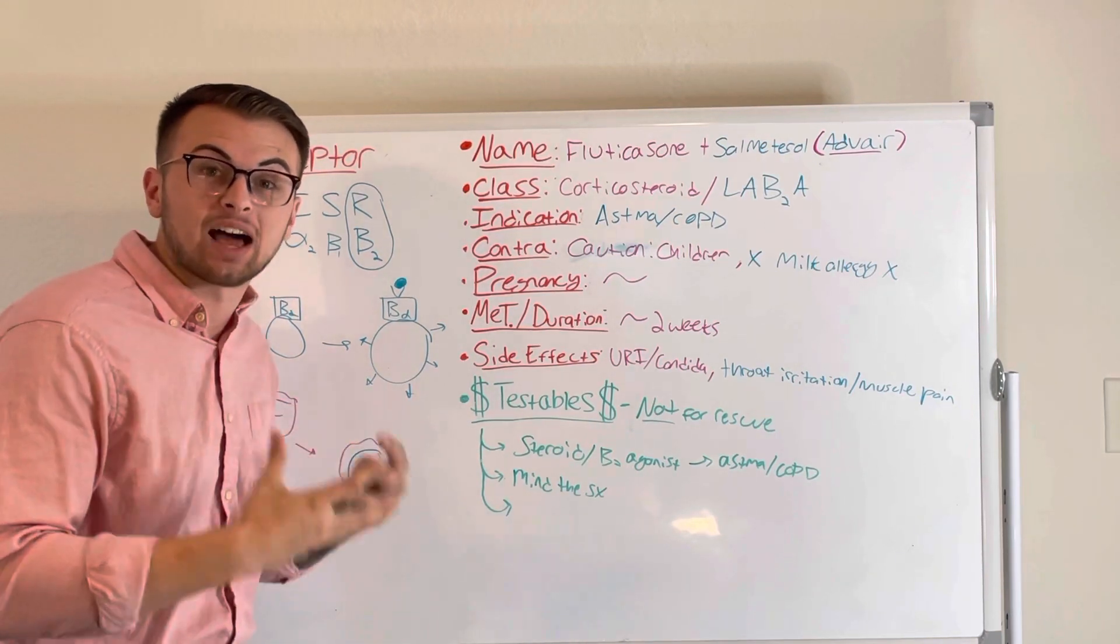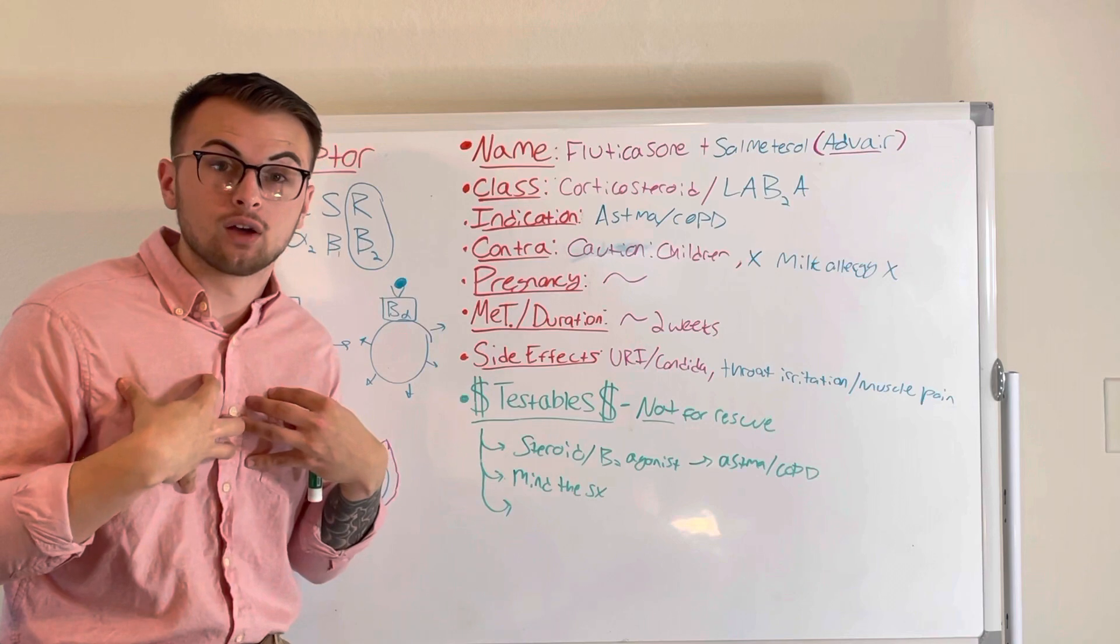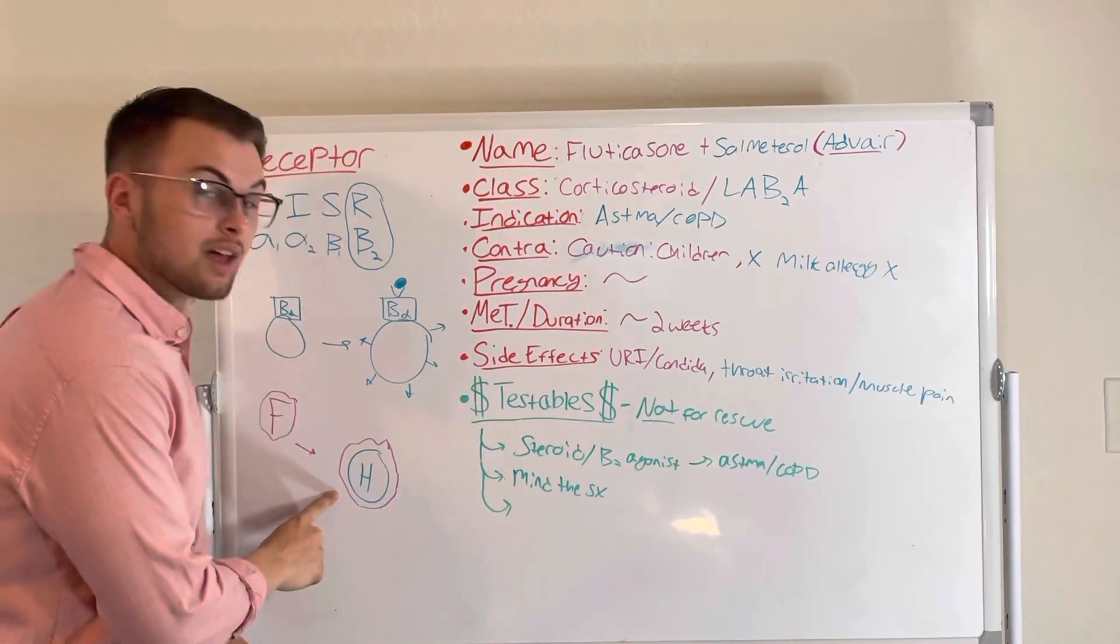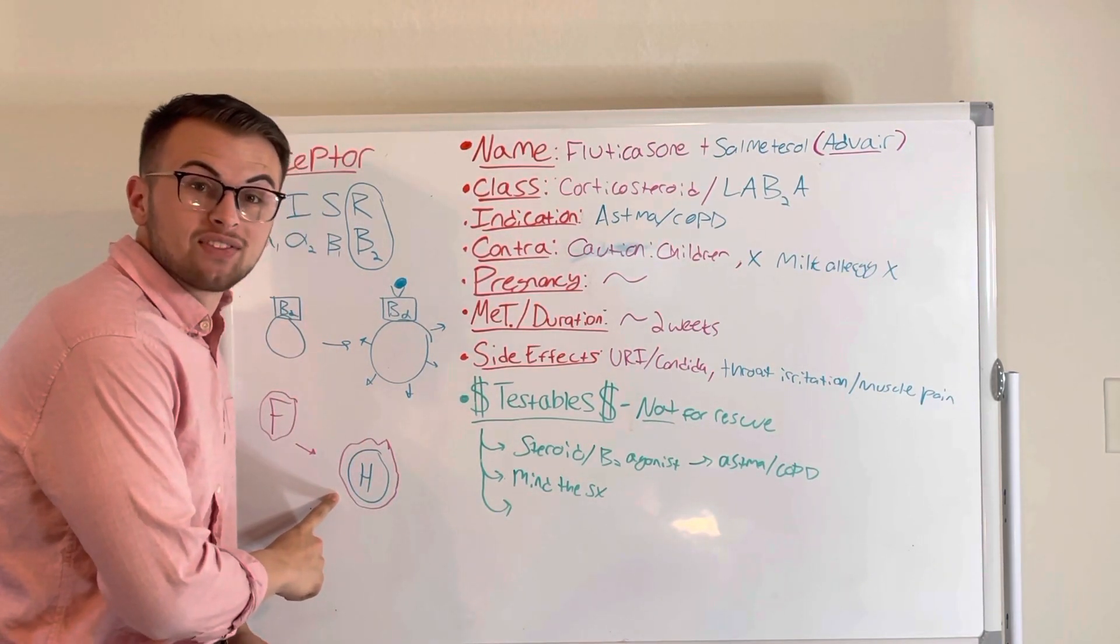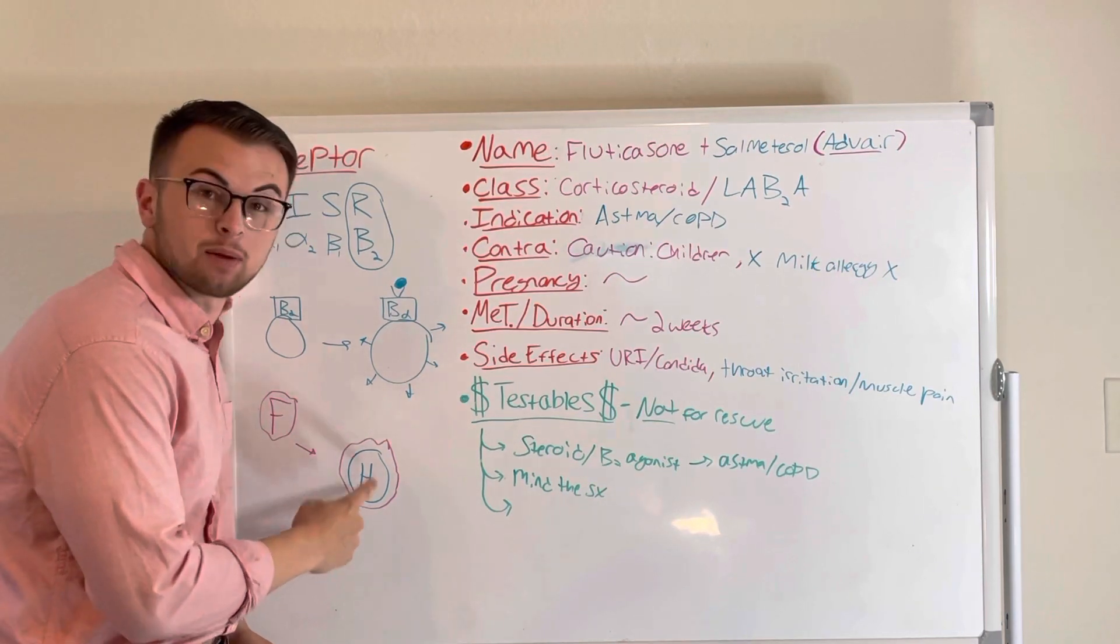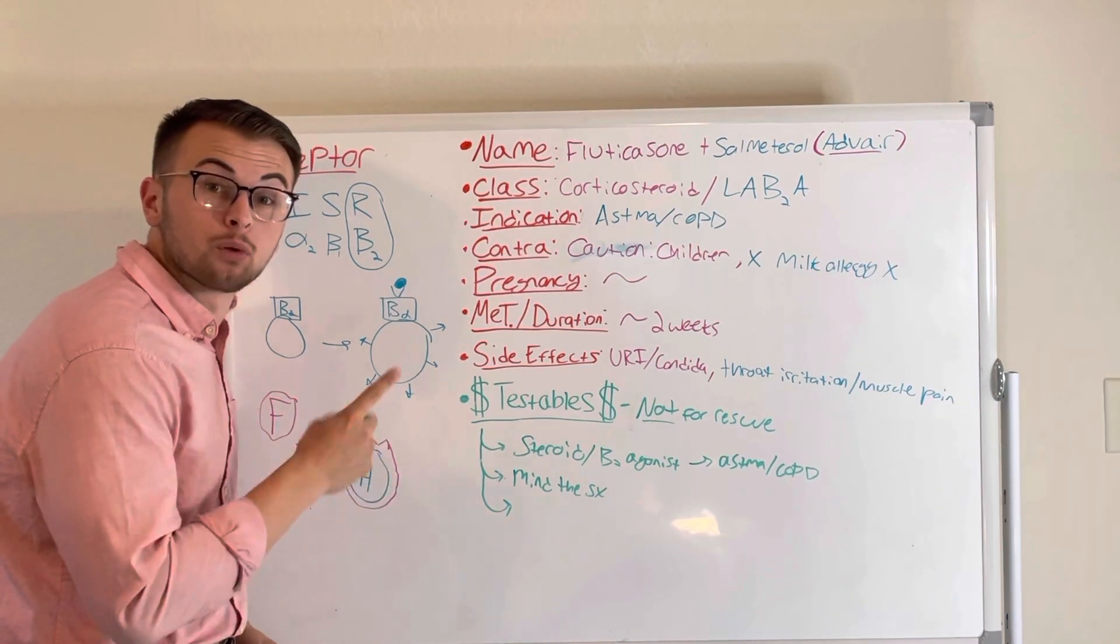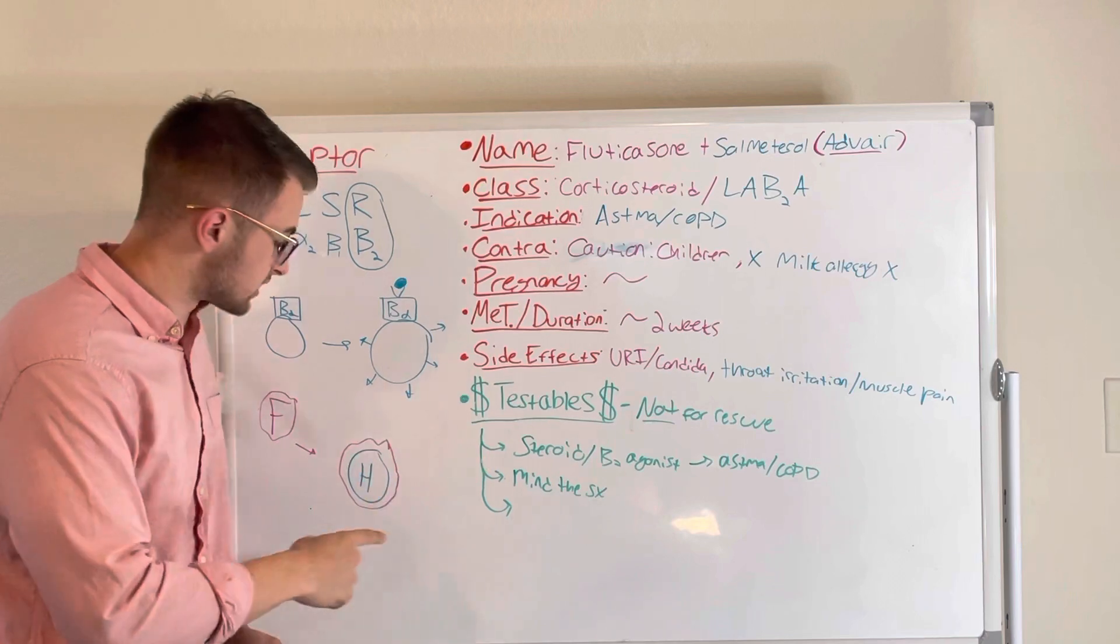Fluticasone is a potent corticosteroid that inhibits inflammatory cells from releasing inflammatory substances like histamine.